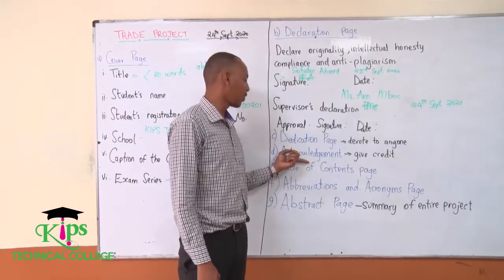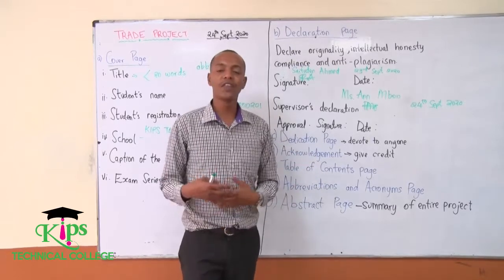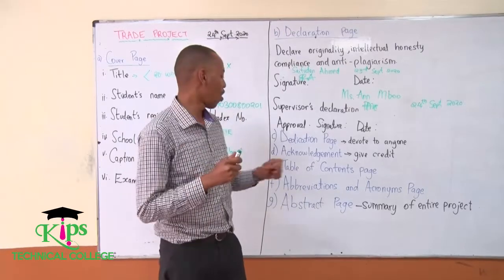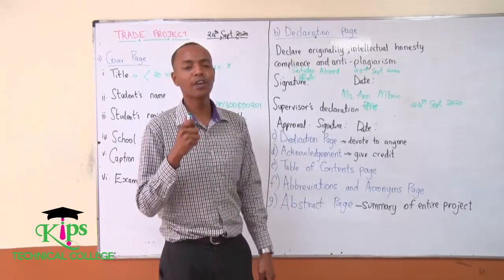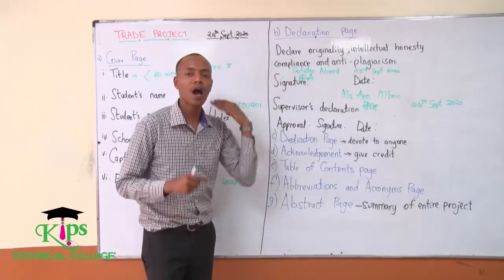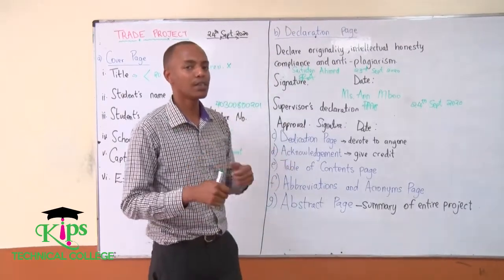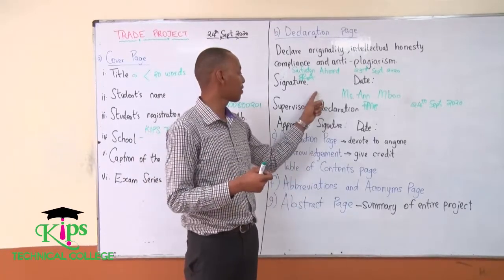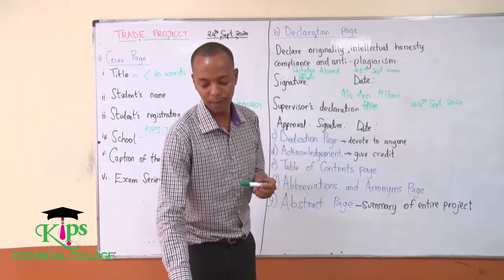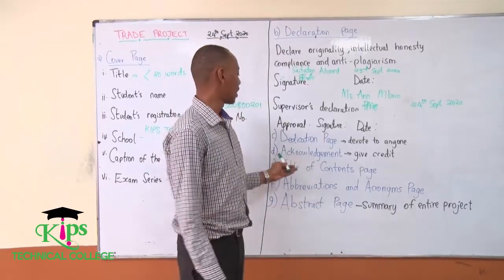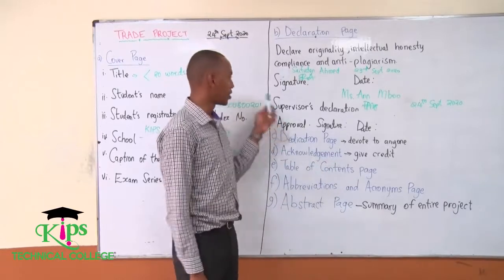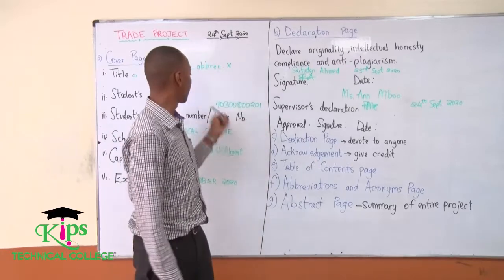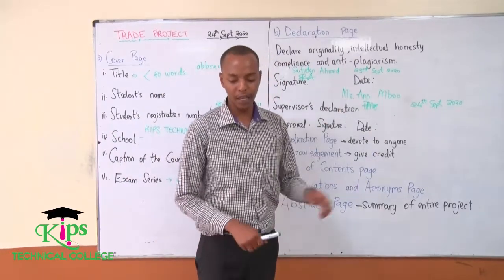Then you go to the fourth page, which is usually the acknowledgement. You need to acknowledge the people that helped you in the writing of that project. You want to give credit to the company — if your project was about KCB Bank — and you also need to acknowledge your supervisor, because they are the ones that helped you. This must not exceed one page. On these preliminaries, they should never exceed one page, any of the contents.